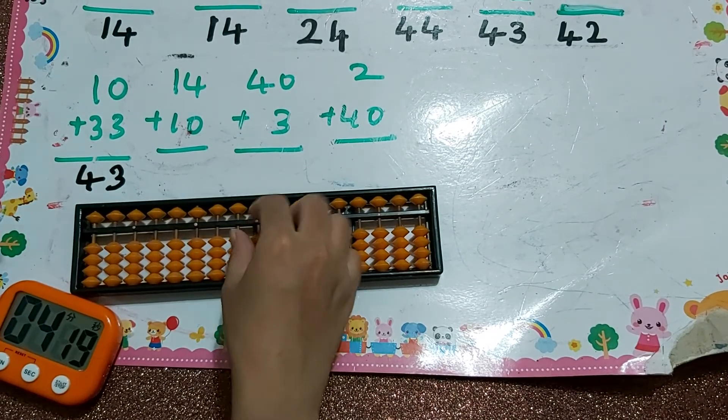Next, 10 plus 33, the answer is 43. Next one, 14 plus 10, the answer is 24. Next one, 40 plus 0. 0 means you are not going to do anything, just keep the beads in respective positions.